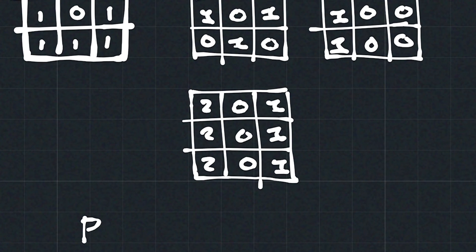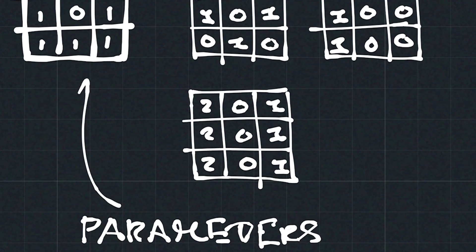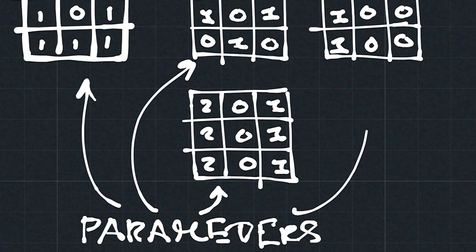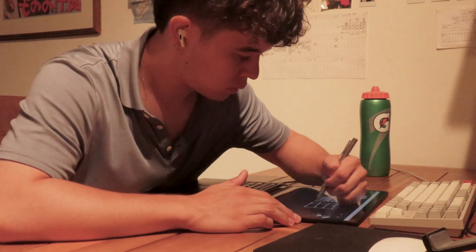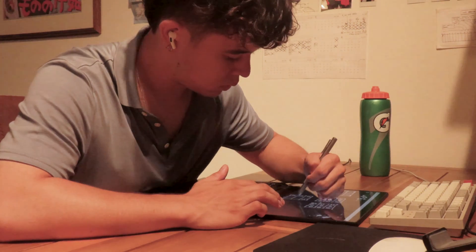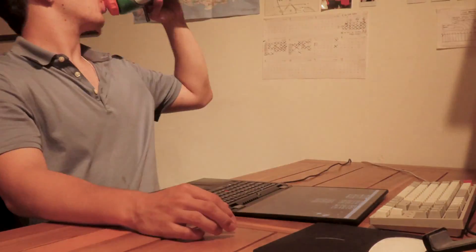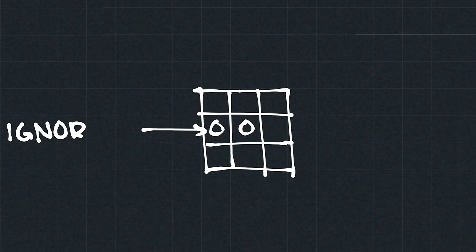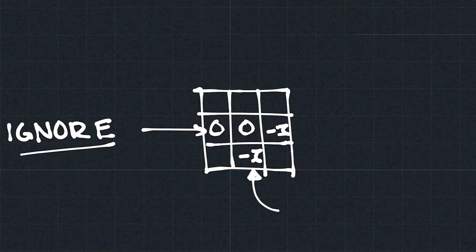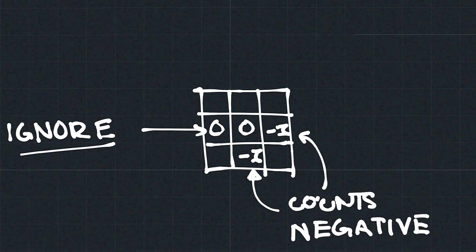We can encapsulate all of these behaviors in a set of eight numbers. In computer science and AI, we refer to numbers that control the behavior of a computer model as parameters. Our parameters are these eight numbers, which I will allow to be negative one, zero, or one. So for each neighbor, a cell can either completely ignore it, count it negatively towards its total neighbor count, or count it positively towards its neighbor count.